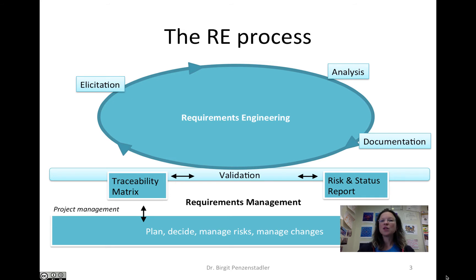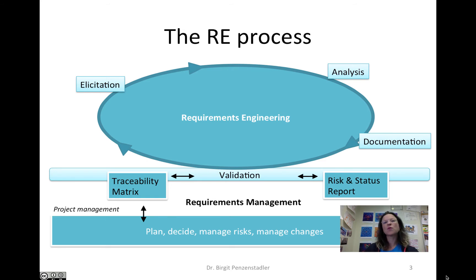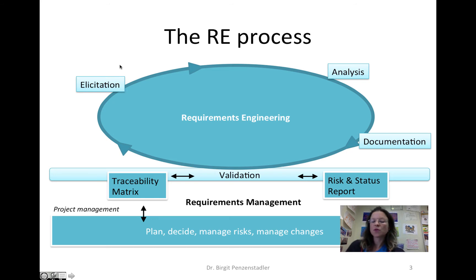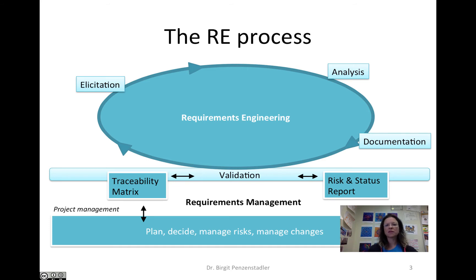The overall requirements engineering process can be depicted in a circular diagram showing four phases. We start with elicitation at the top left, then move into analysis, then documentation, then validation and verification, before another circle of elicitation. Elicitation is where we find initial requirements, talk to stakeholders, conduct interviews, and make surveys. The analysis part is where we check whether those requirements form a consistent baseline and whether there are any contradictions or trade-offs.